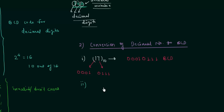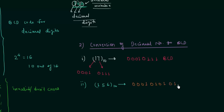In the second example, we have to represent 156 in BCD. First, 1 is represented by 0001. Then 5 is represented by 0101 — you can refer to the table. And 6 is represented by 0110. So the BCD representation of 156 is 0001 0101 0110. Very simple.